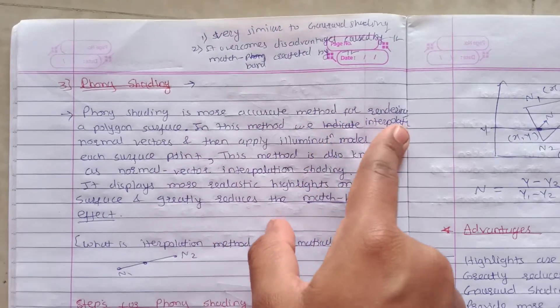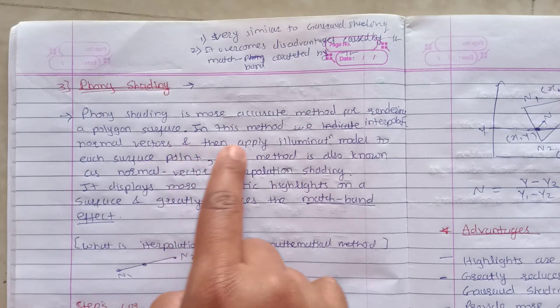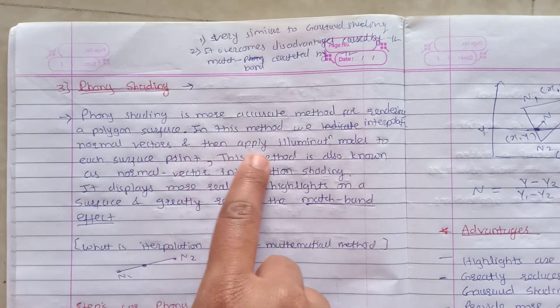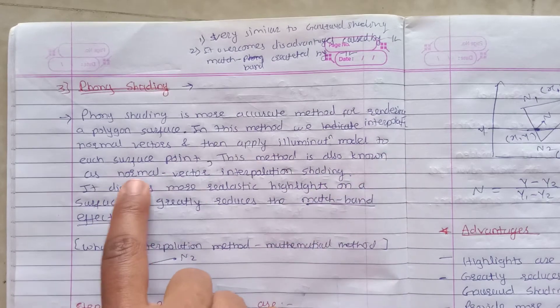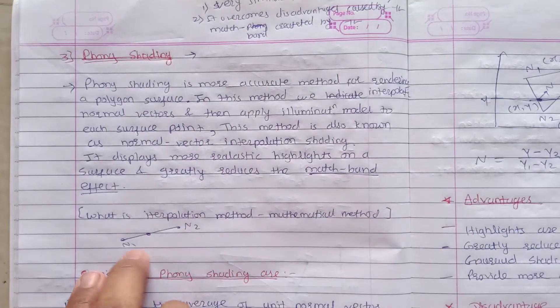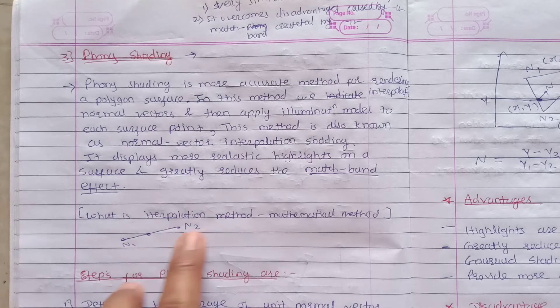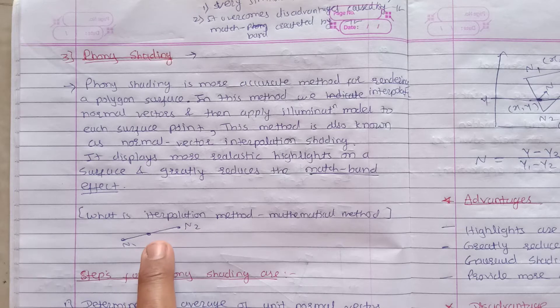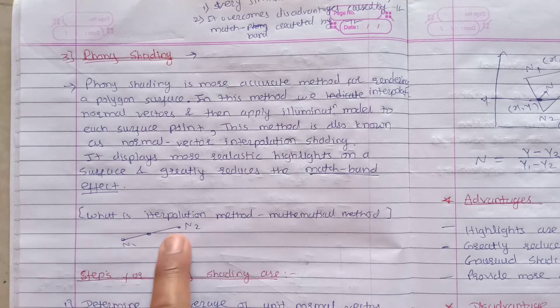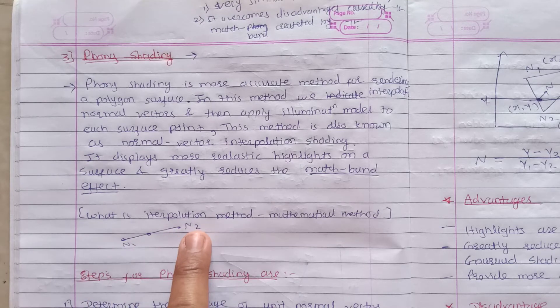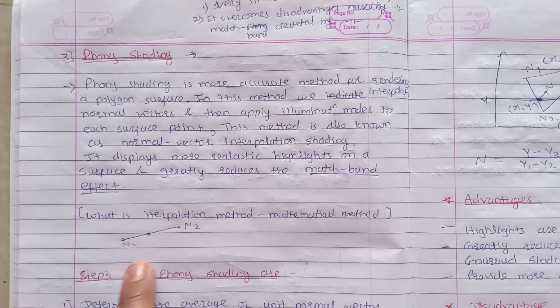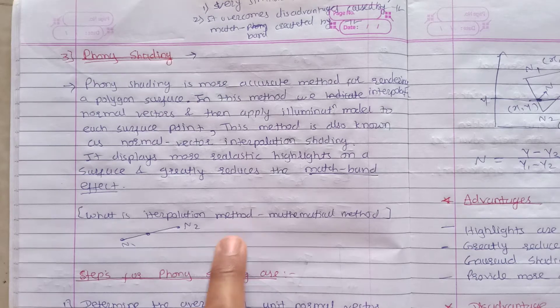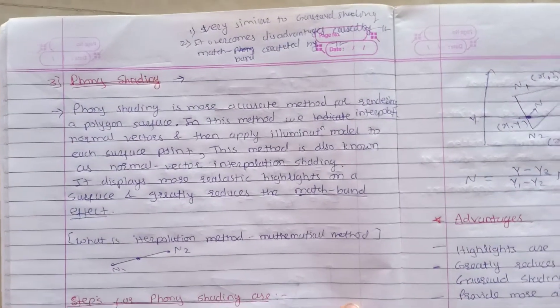Phong shading is a more accurate method for rendering a polygon surface. In this method we interpolate normal vectors and then apply the illumination model to each surface point. If we know the intensities at n points, we can find out the intensity of any point in between using interpolation. Here normal vectors are denoted by n1, n2, while in Gouraud shading they were denoted by i1, i2.